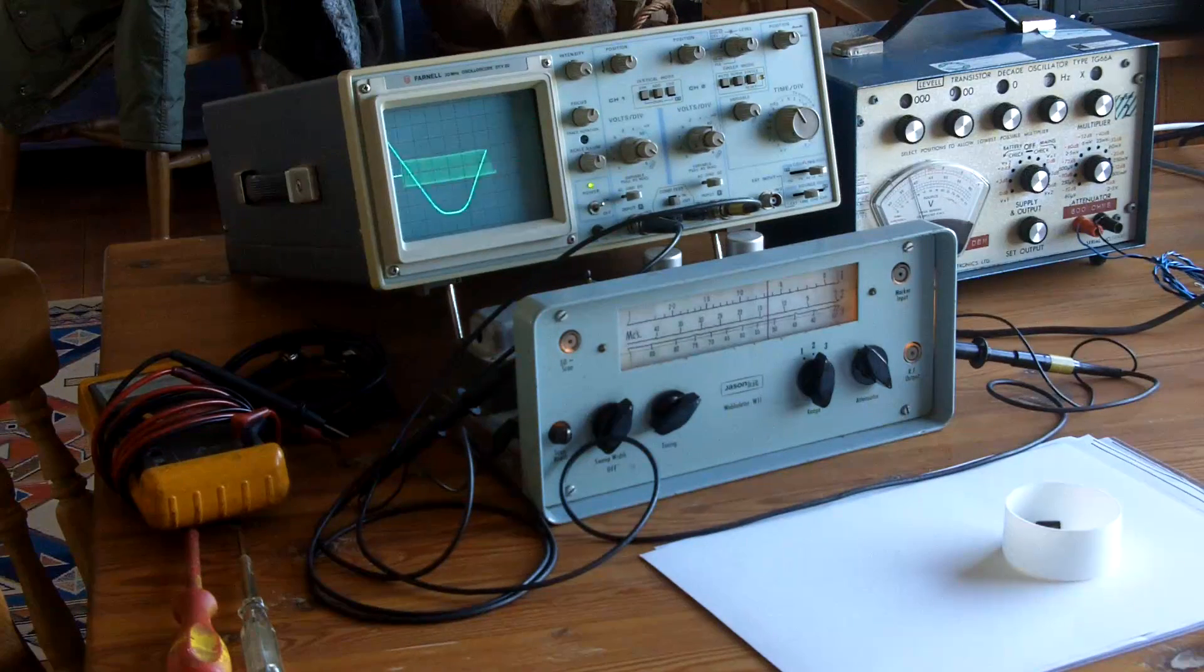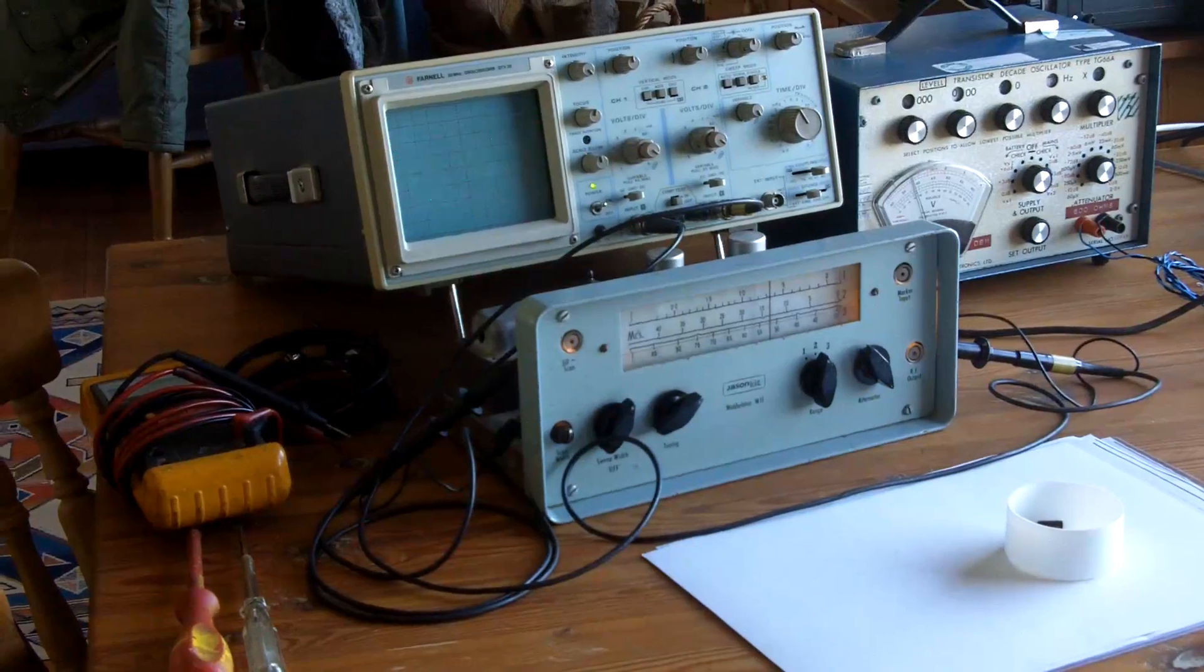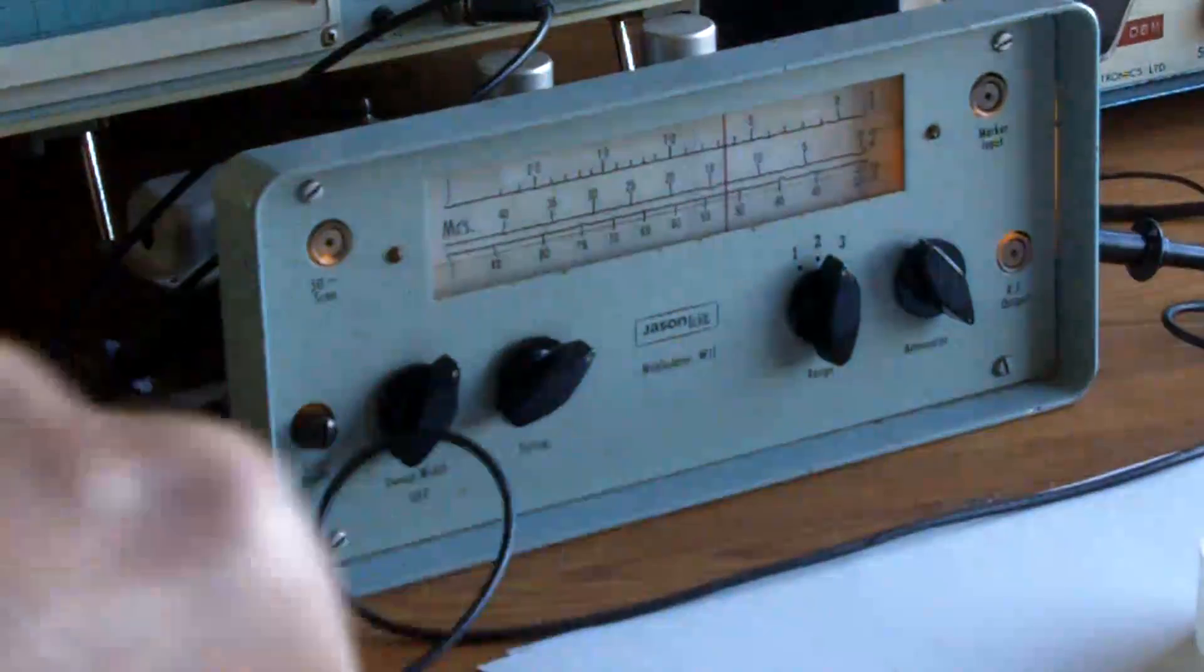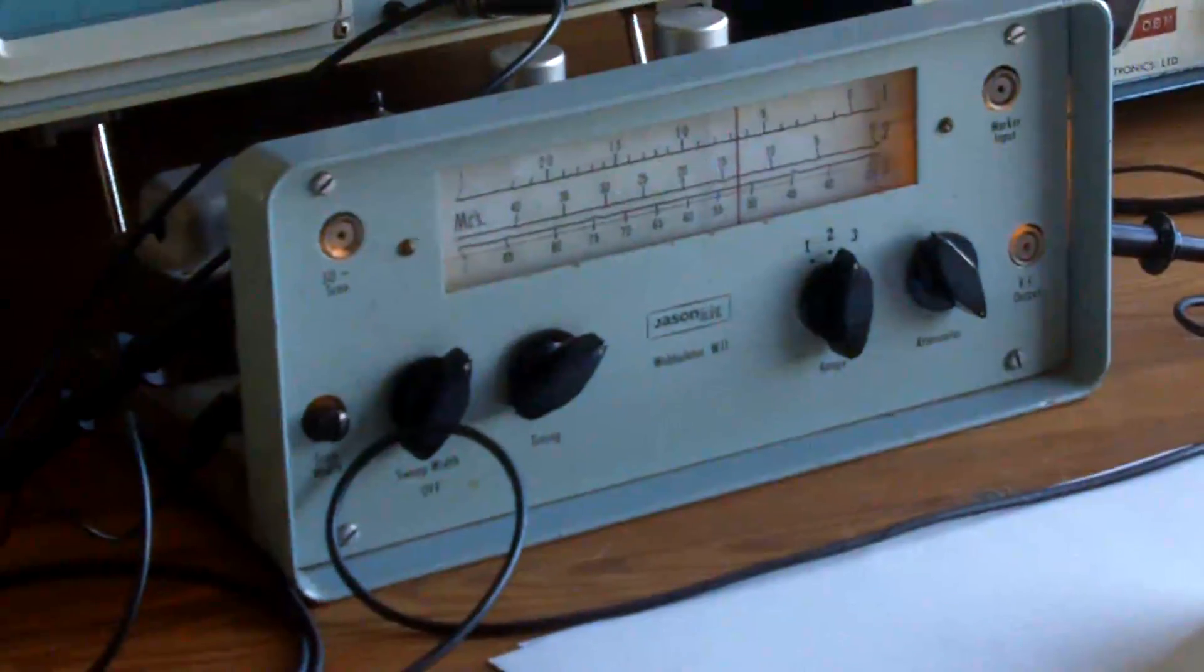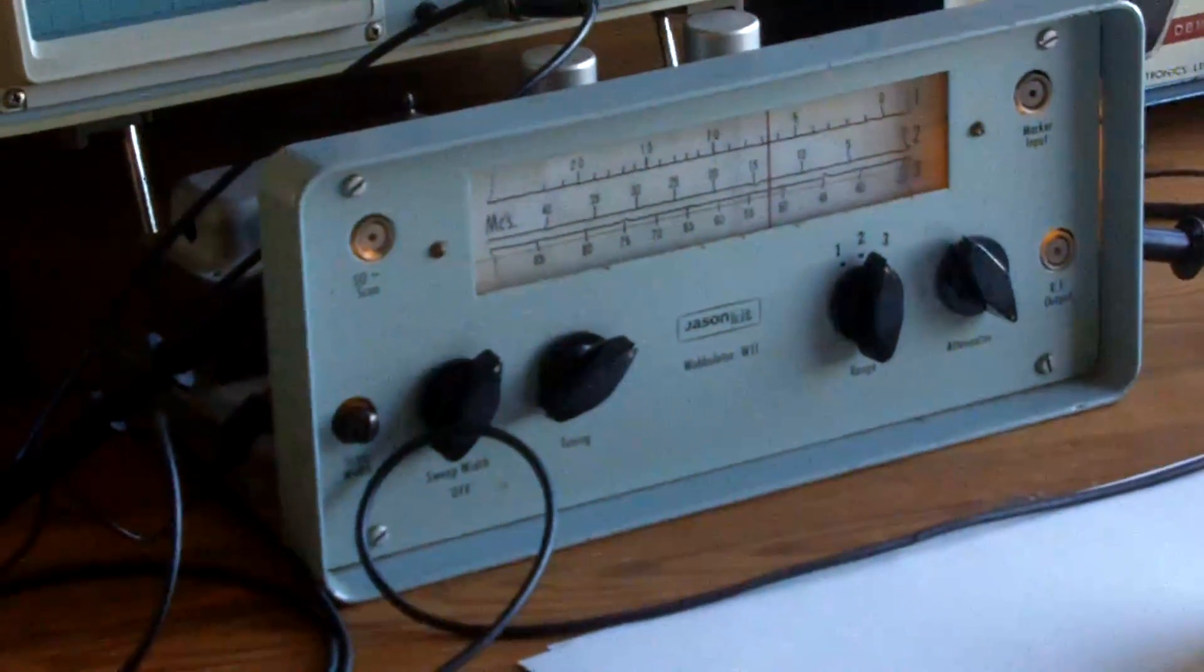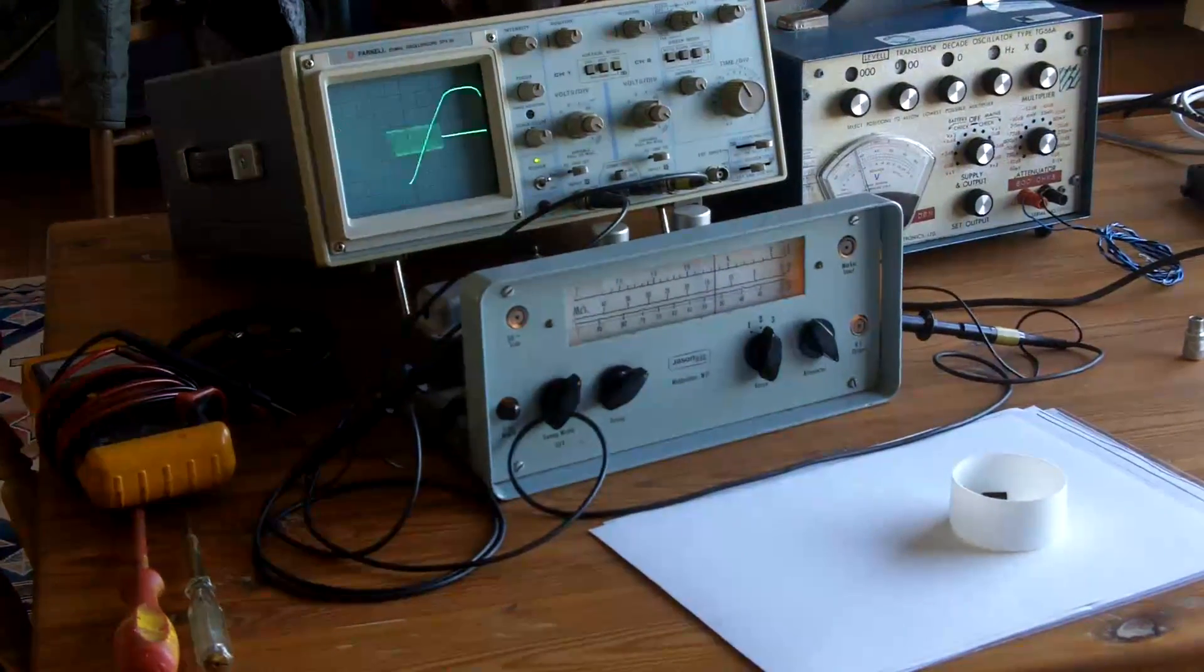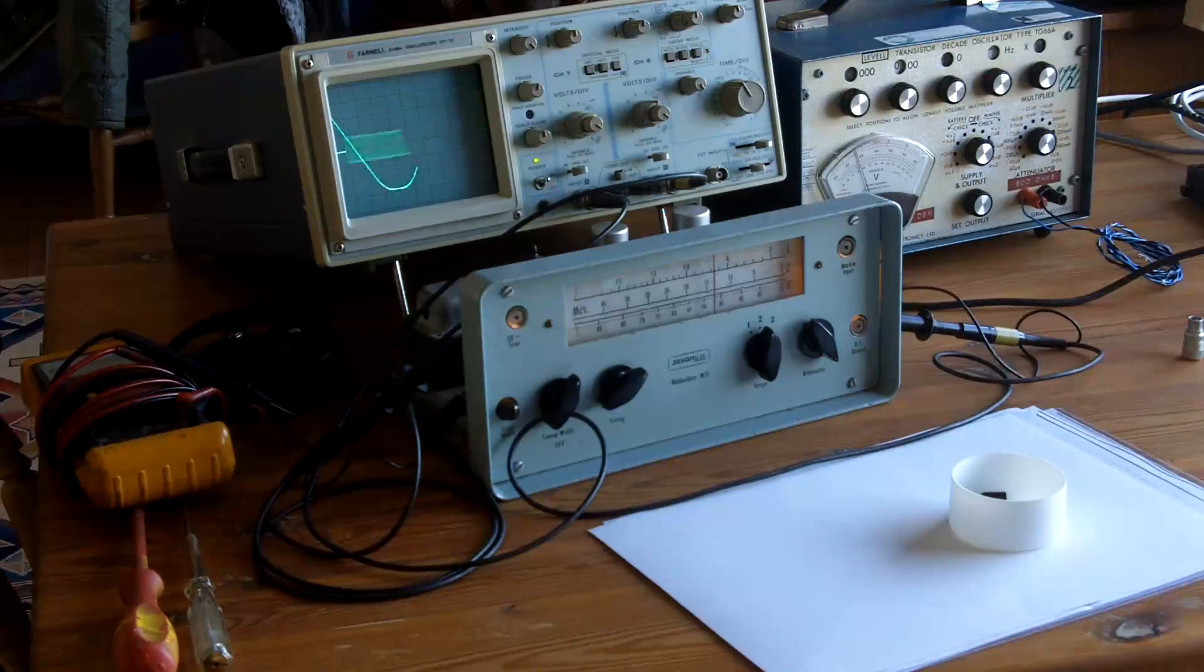Hi again and welcome to this ongoing repair of the Heathkit Wobulator. That's this device here and you'll remember that that's the device that's going to be used to measure the characteristic wave shape of the IF transformers in the Eddystone receiver that I'm repairing and playing with.